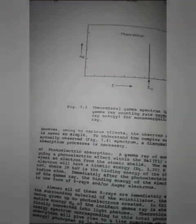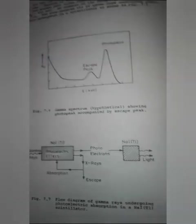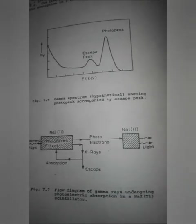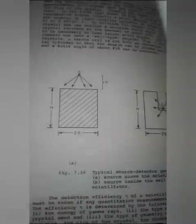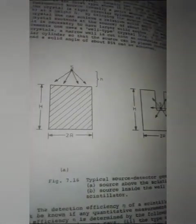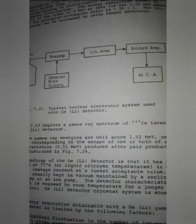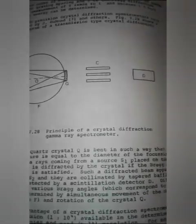Chapter 7 on the gamma ray spectrometer features the scintillation gamma ray spectrometer and a flow diagram of the gamma ray energy spectrometer showing photoelectric absorption in a sodium iodide scintillator. Also shown are the germanium-lithium gamma ray spectrometer, typical nuclear electronic systems used with a germanium-lithium detector, the crystal diffraction spectrometer, pair spectrometer, magnetic spectrometer, and the principle of crystal diffraction gamma ray spectrometry.